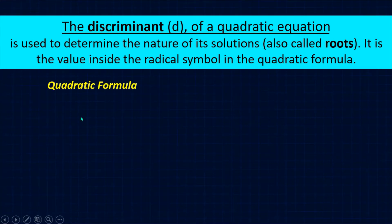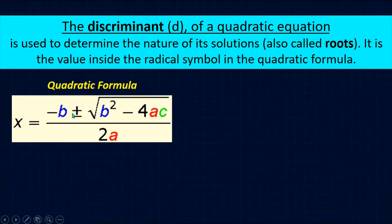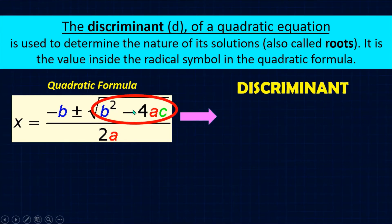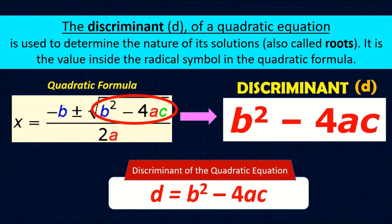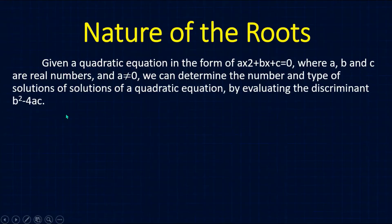From the quadratic formula — negative b plus or minus square root of b squared minus 4ac, all over 2a — the value inside the radical symbol is what we call the discriminant. The discriminant is represented as small letter d, and the formula is: d equals b squared minus 4ac.